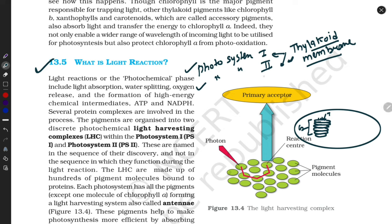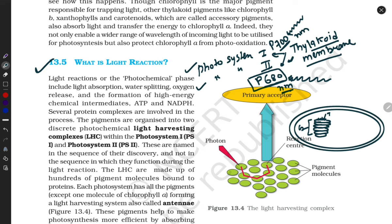The other name for Photosystem Two is P680, because it absorbs 680nm wavelength of light. We can call Photosystem One as P700, because it absorbs 700nm wavelength of light. So the chloroplast contains thylakoids, and thylakoids contain Photosystem One and Photosystem Two — also called P700 and P680. They are situated on thylakoid membranes.